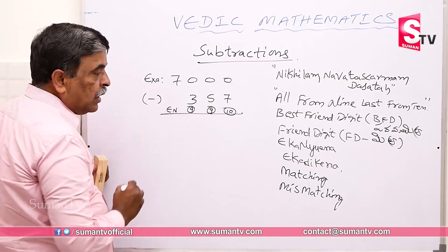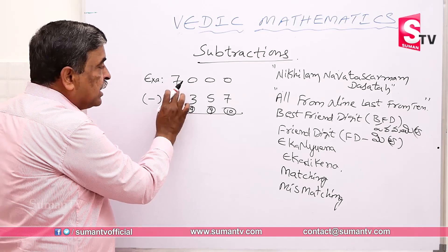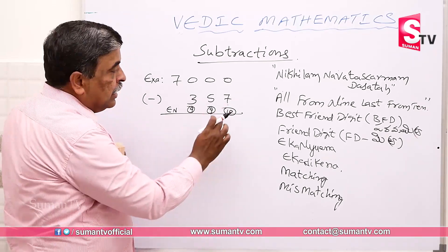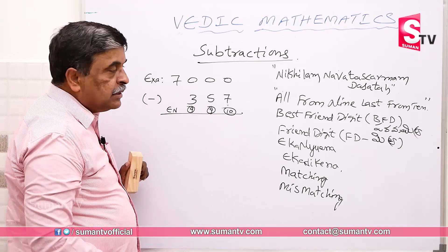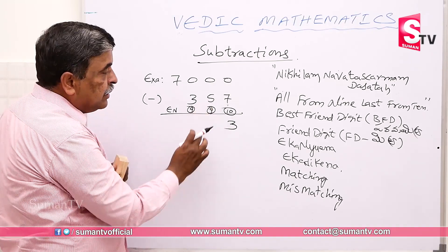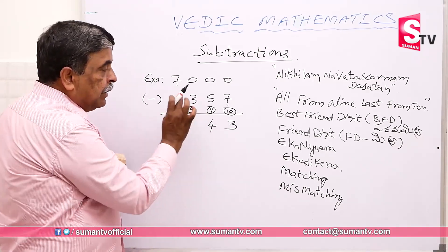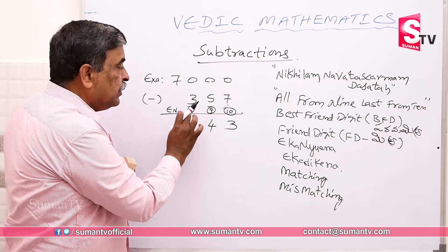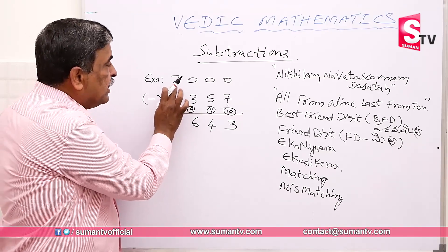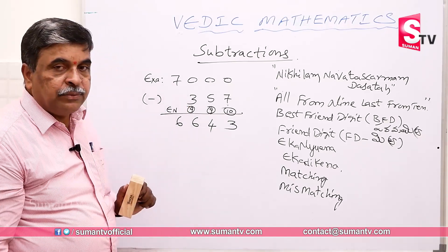Now the best friend digit is 1. The best friend digit gives us 3; 3 plus 0 is 3. Next, the friend digit: 9's complement of 5 is 4; 4 plus 0 is 4. Next: 9's complement of 3 is 6; 6 plus 0 is 6. Then 7 minus 1 is 6. So our result is 6, 4, 3.